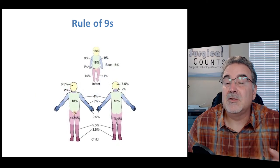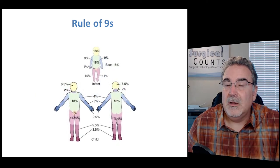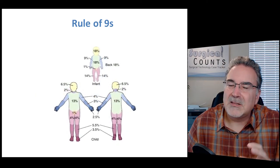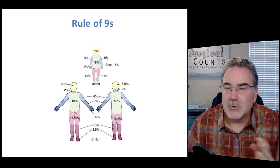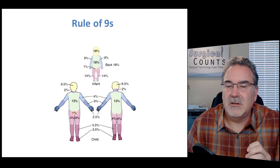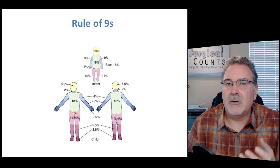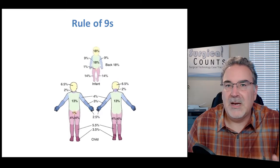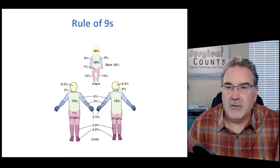When it comes to infants or children, the rule of nines breaks down a little because the percentages are a little different. Generally, the rule of nines is used on adult patients.